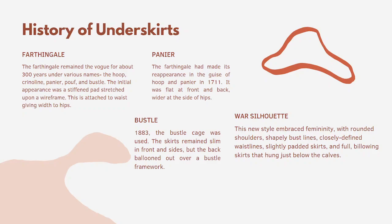The farthingale was followed by the panier. The panier was flat at the front and back, but really wide at the sides. Next followed the bustle cage in 1883, where the skirts remained slim in front and sides but the back ballooned out over a bustle framework.